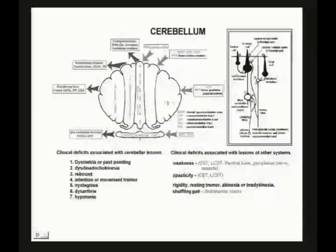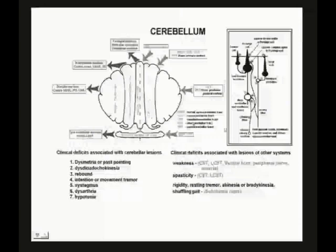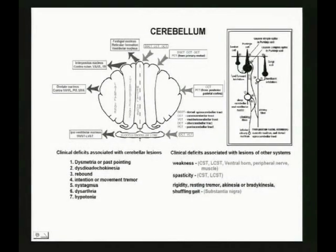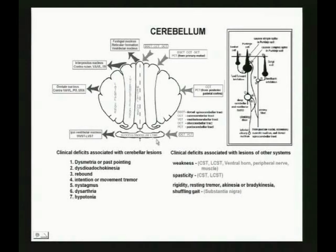The lateral zone is the thinking and planning zone. The intermediate zone is for comparing and updating. For the cerebellar circuitry: Purkinje cells are inhibitory on the deep nuclei, using GABA. All deep nuclei are excitatory — some go to the red nucleus, some to the thalamus, some to the reticular formation. The classic deep nucleus of the floccular nodular lobe is the vestibular complex — that's classic national boards.